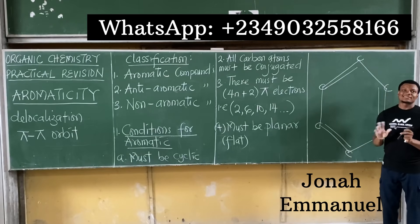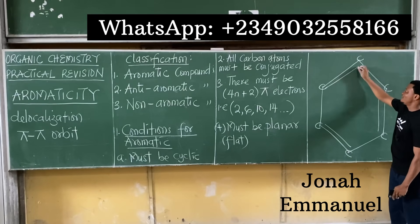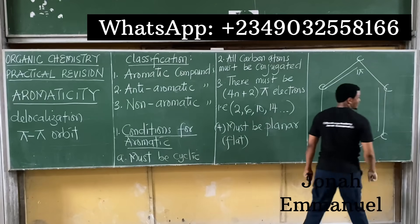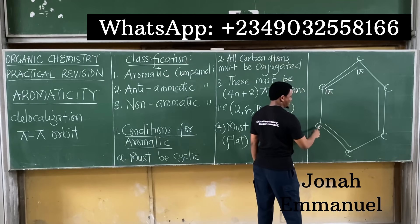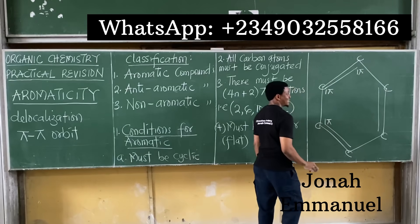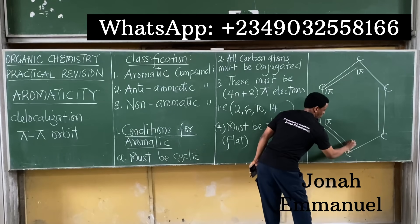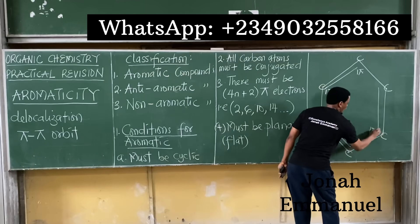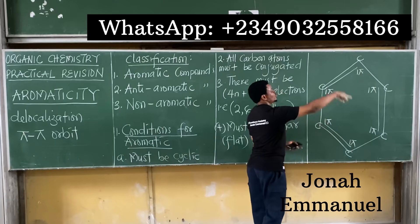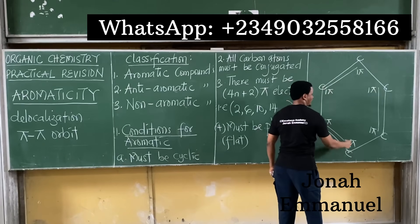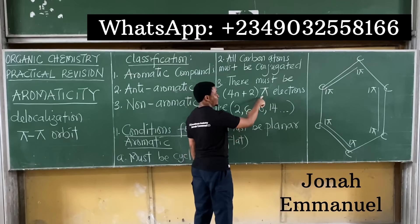Each carbon in benzene has a double bond, so each contributes one pi bond. Counting: one pi, one pi, one pi, one pi, one pi, one pi — in total, six pi electrons. So benzene has six pi electrons, which meets condition three.